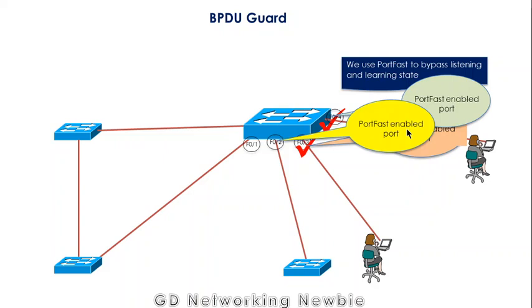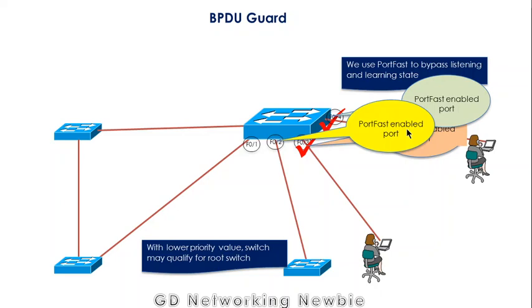This new switch may have a lower priority value than the rest of the switches in the network — lower than this switch, this switch, or this switch. If you remember, the switch with the lowest priority value will be selected as the root switch. So when this new switch gets connected, it can qualify as the new root.